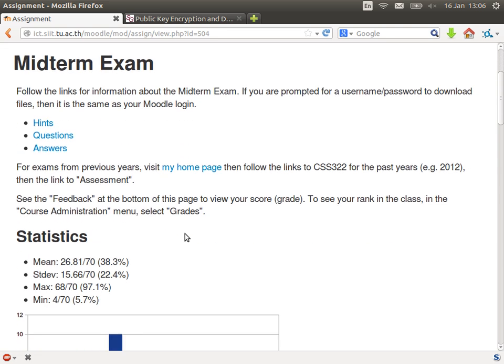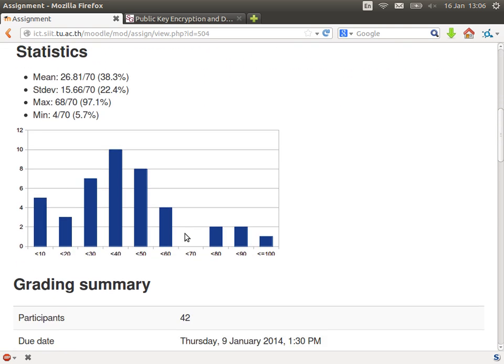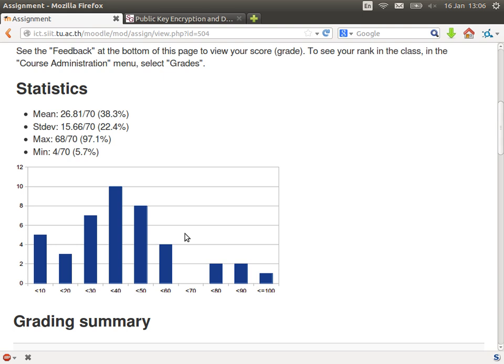There are some statistics. So you can compare against others. The mean, so the exam is out of 70. Your score is given out of 70. The mean was 26 or about 38%.